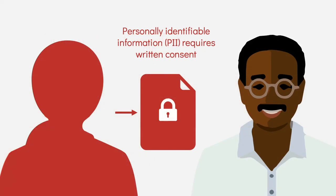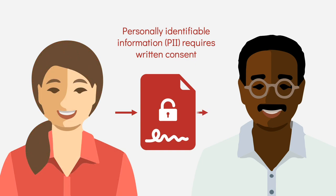The general rule under FERPA and California law is that an educational agency must protect the confidentiality of personally identifiable information, also known as PII, in an education record. In general, this information cannot be shared with third parties unless a signed written consent allows release of the information. However, there are exceptions that allow disclosure without need of a consent in some cases.